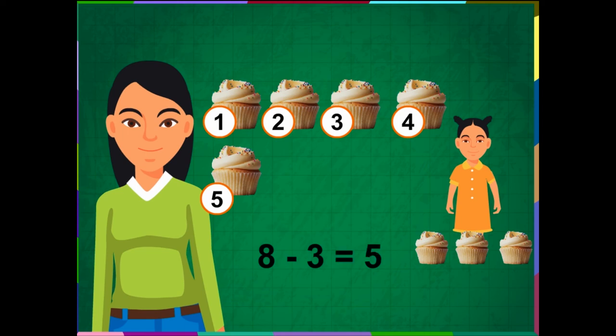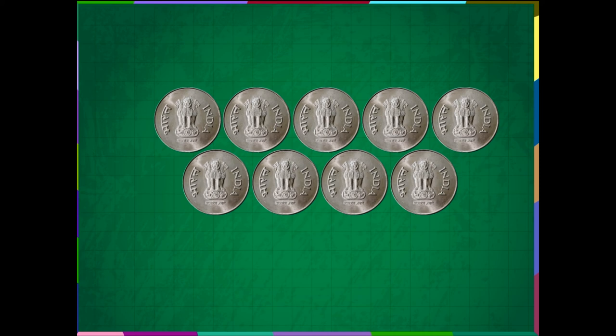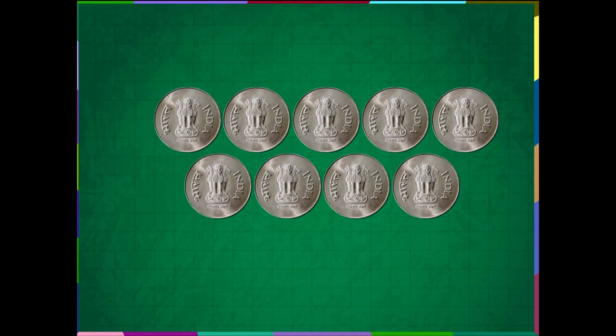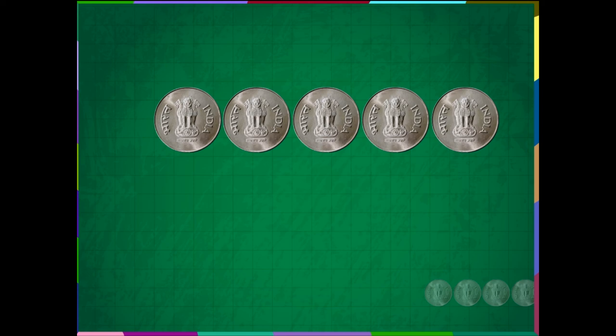Let us count these coins. There are 9 coins. Take out 4 coins. How many coins are left? 1, 2, 3, 4 and 5. 5 coins are left.